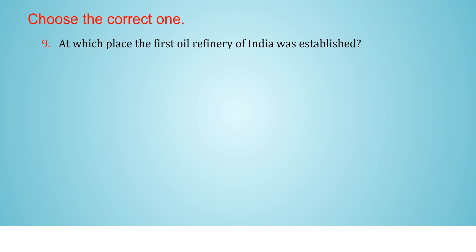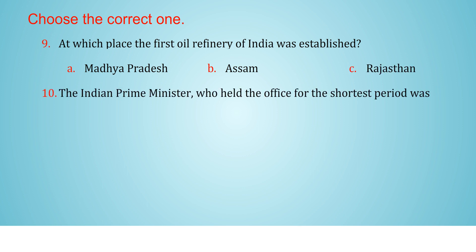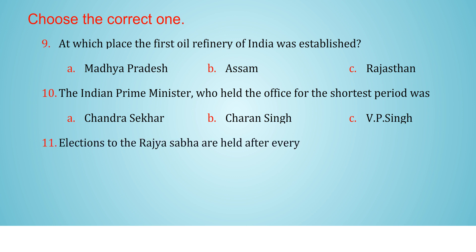9. At which place was the first oil refinery of India established? a. Madhya Pradesh b. Assam c. Rajasthan. 10. The Indian Prime Minister who held the office for the shortest period was a. Chandrasekhar b. Charan Singh c. V.P. Singh